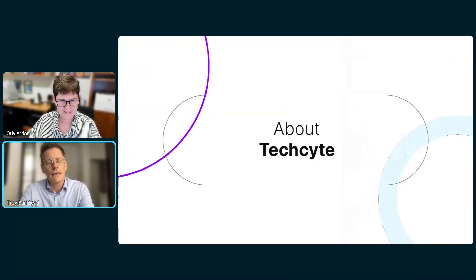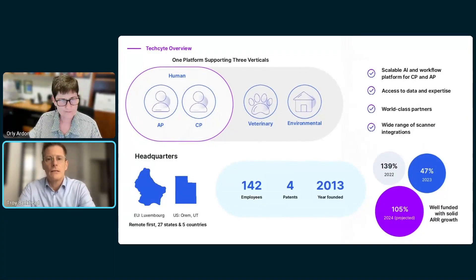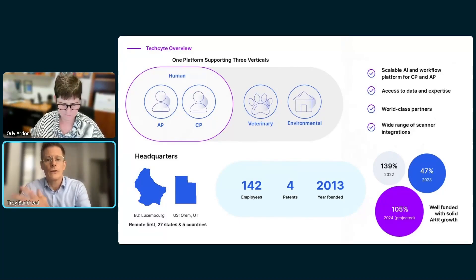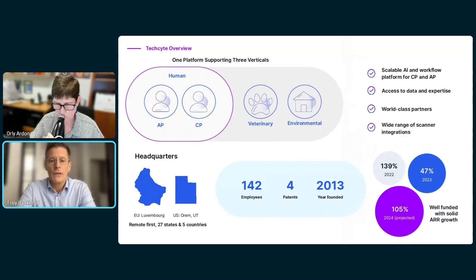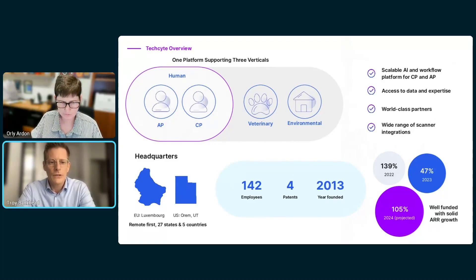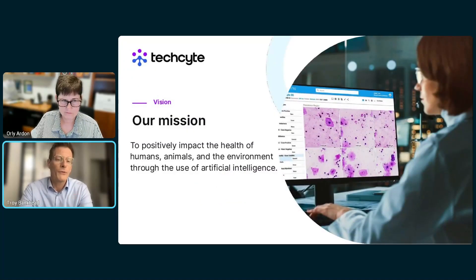Very briefly about TechSite: as a company, we are focused on developing the human laboratory environment, but we also have verticals in veterinary and environmental. Our offices are located in Utah, with European offices in Luxembourg. We're about 160 people today and a remote-first company. We use AI to create a positive impact on the health of humans, animals, and the environment.